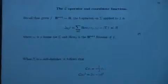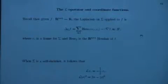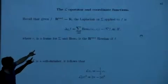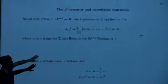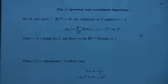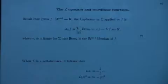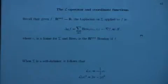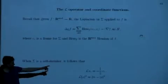This drift operator script L plays the role for self-shrinkers that the Laplacian does for minimal surfaces. For any sub-manifold, the Laplacian on a function F is given by tracing out the Hessian over the tangent space, then subtracting off the mean curvature times the normal part of the gradient. Taking this formula and substituting in the self-shrinker equation, which tells us what H is in terms of the normal, the coordinate functions turn out to be eigenfunctions of script L.